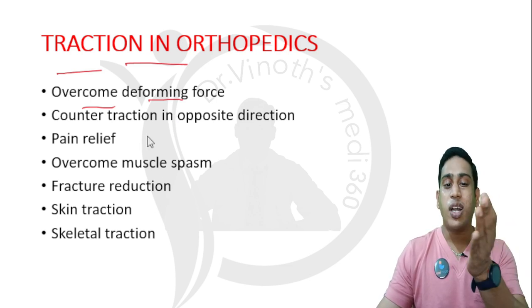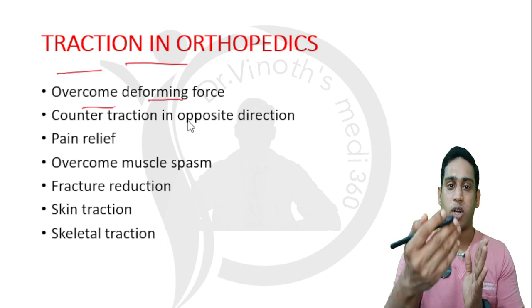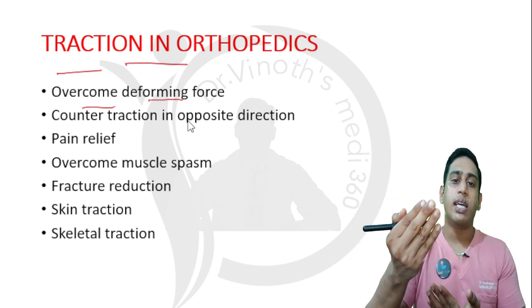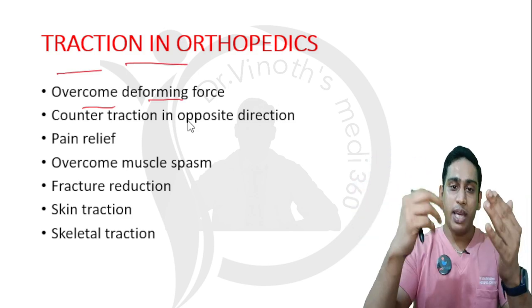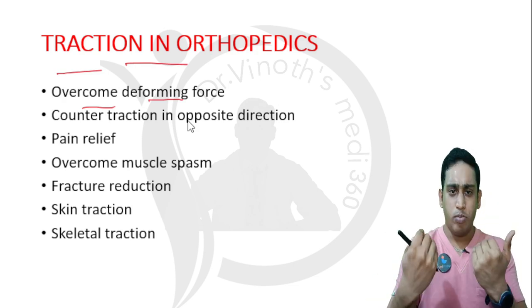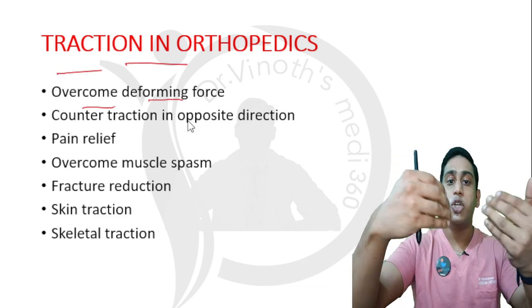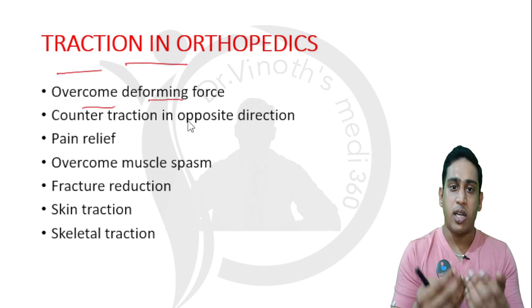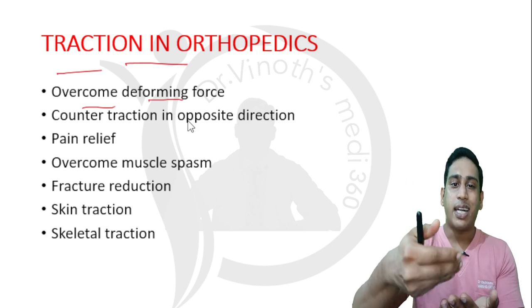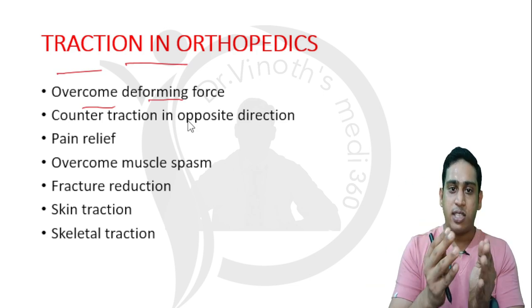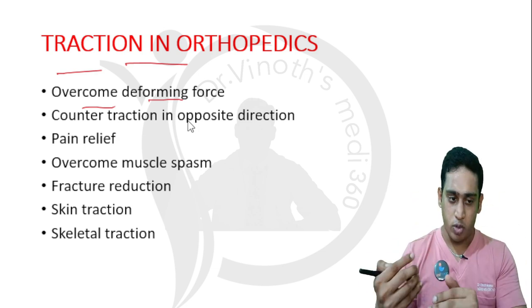There should be a counter-traction applied in the opposite direction. In a lower limb fracture, the counter-traction will be provided by giving a head-end elevation — the head is down and the limb is elevated. By giving limb elevation, our own body due to gravity acts as a counter-traction. We will also be suspending the traction twine with weights, which acts as continuous traction to counteract the deforming force.